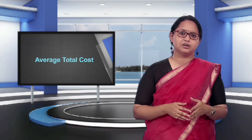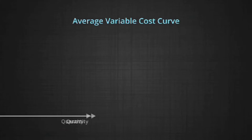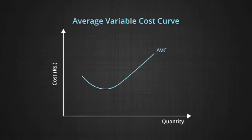Now let us talk about the AVC, AFC, and AC curves. The average variable cost curve: AVC is the per unit of total variable cost — it reflects the per unit changes in total variable cost. The AVC curve is a U-shaped curve. This is because of the law of variable returns to a factor. As output increases, the average variable cost declines, comes to a minimum, and then starts to rise.